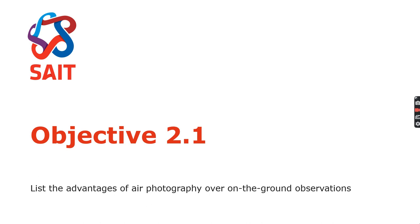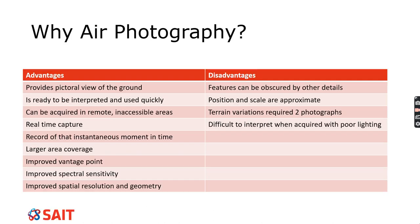Objective 2.1 is to list the advantages of aerial photography over on-the-ground observations. There are lots of different advantages, and I've also included some disadvantages here. So we think about being on the ground and looking around at an area — why would that be worse than aerial photography, and why would it be better?